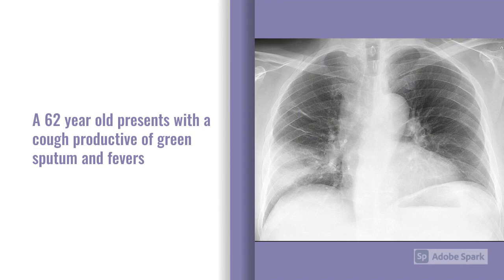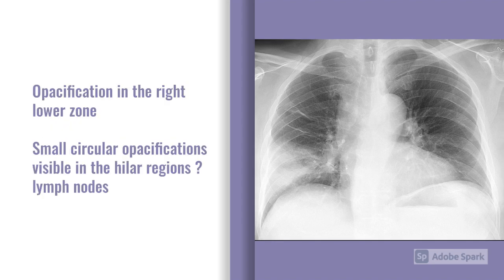Next vignette: a 62-year-old who presents with cough productive of green sputum and fevers. Even before looking at the x-ray, you kind of know the diagnosis — if someone presents with a cough, fevers, and bringing up sputum, they have a chest infection. Always put the x-ray into the clinical context of the patient. Going through RIP: rotation is good, inspiration is adequate, and penetration appears okay. Airways look okay. The obvious abnormality on B is opacification in the right lower zone, with some more prominent lung markings on that right side. There are also some small circular opacifications visible in both hilar regions — more likely lymph nodes given their circular shape. The diagnosis is a right lower zone pneumonia.